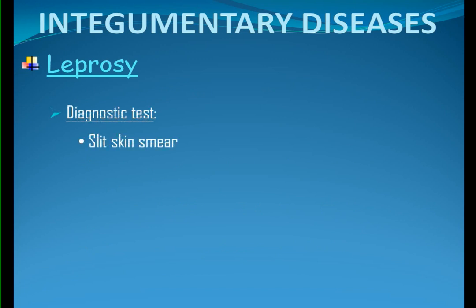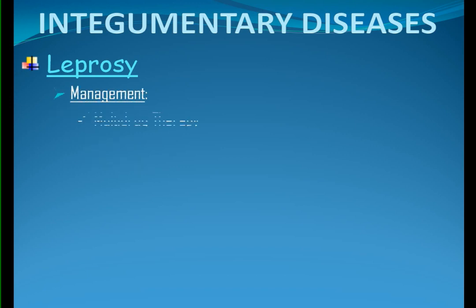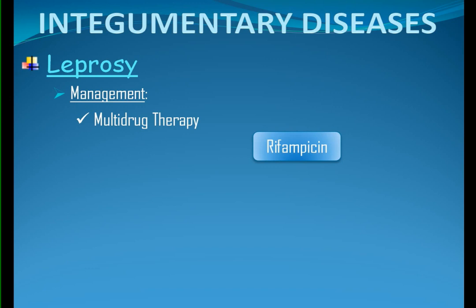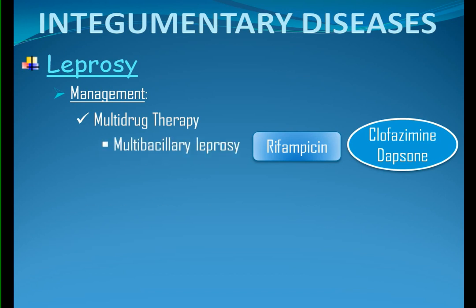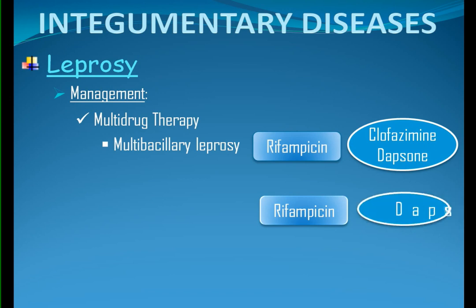Diagnostic test: slit skin smear — done by getting a tiny cut of a lesion as a sample, examined under a microscope. Next is skin biopsy, used as the definitive test to confirm the diagnosis of leprosy. Management: multi-drug therapy. A single drug is not recommended because it can lead to drug resistance, so a combination of drugs is used depending on the classification of the disease. Rifampicin is the most important drug and is combined with clofazimine and dapsone for multibacillary leprosy, while for paucibacillary leprosy, it is a combination of rifampicin and dapsone only. Next is isolation, followed by skin care.